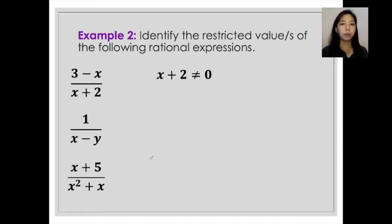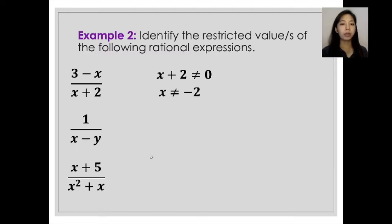From here, we have to apply the addition property of equality. So to be able to get the value of x that would make the denominator equal to zero, add negative 2 to both sides, and it will give us x is not equal to negative 2. So that number would be the restricted value.